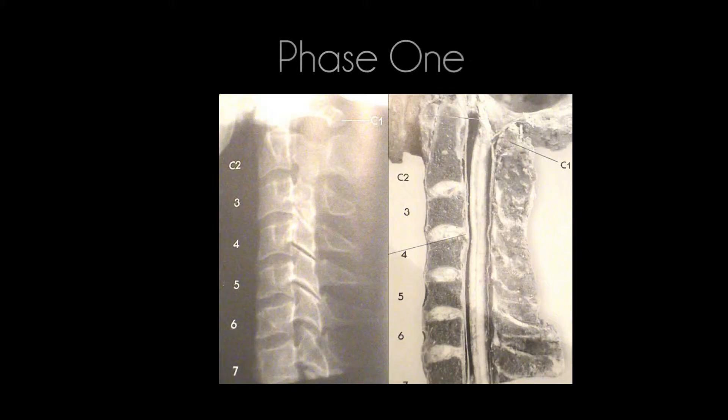In phase one the neck has straightened and gone forward. The best way to understand this is think of a banana. If you have a banana and you straighten it what happens?